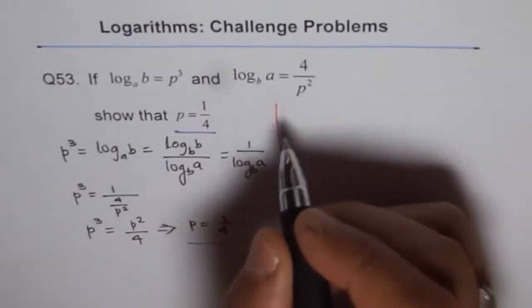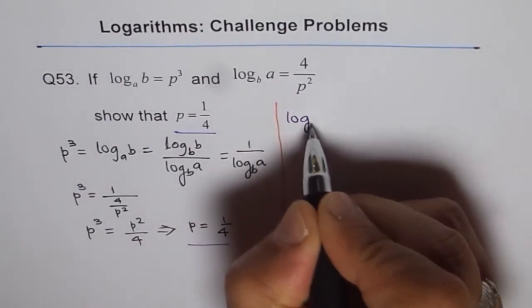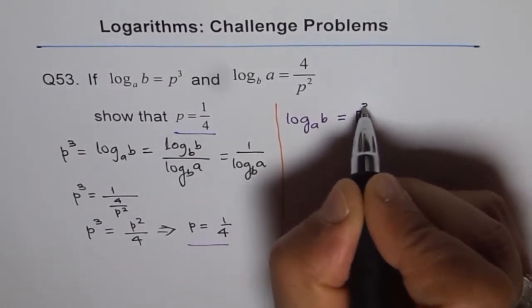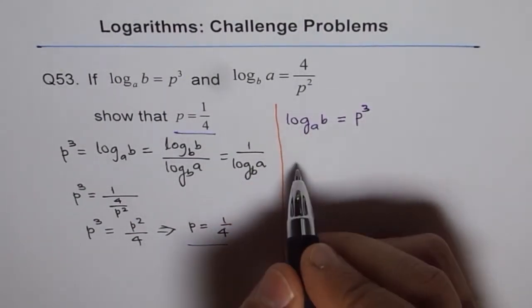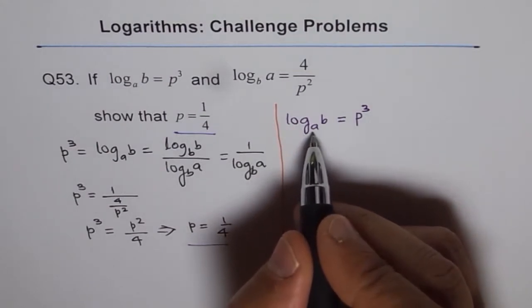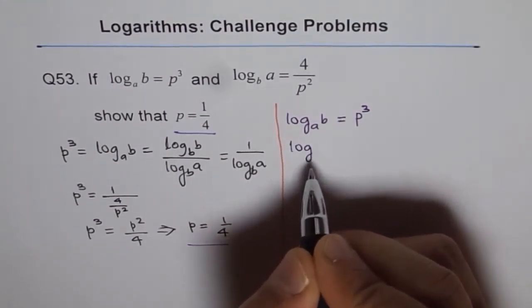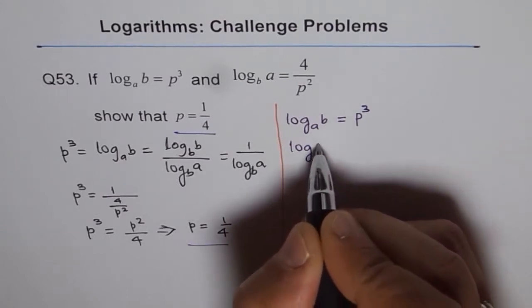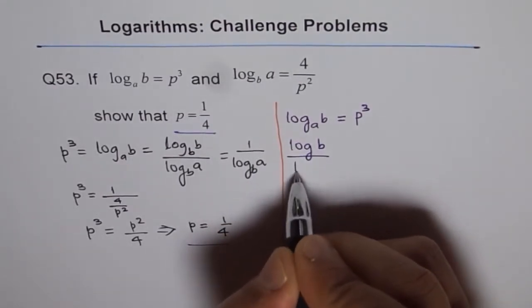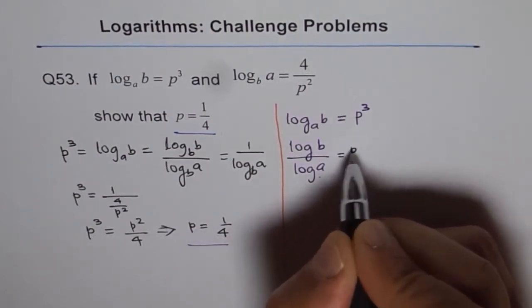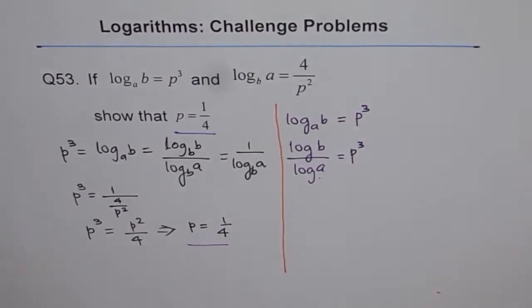So when we say that log A of B equals P cubed, then log A of B can be written as, let me change this to base 10. So I can write this as log 10 of B divided by log 10 of A equals P cubed. So this is one equation I get.